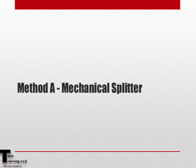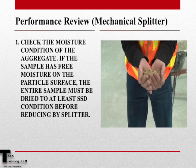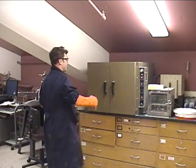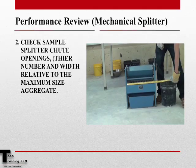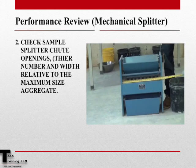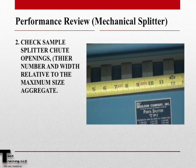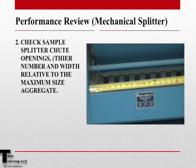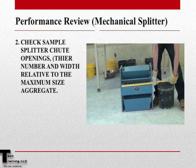Let's now go through the performance review of Method A using a mechanical splitter for AASHTO T248 and ASTM C702. First, we must check the moisture condition of the sample. If the sample contains any surface moisture, it must be dried to at least the saturated surface dry condition. Before placing the sample into the hopper, check the mechanical splitter for the appropriate number of chutes and chute opening widths. For fine aggregate, we must have a minimum of 12 chutes, and for coarse aggregate, a minimum of 8 chutes, and each chute should be approximately 50% larger than the maximum size aggregate for the sample which we are splitting.